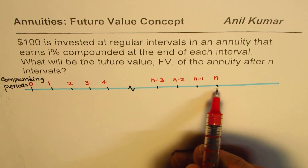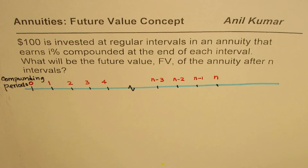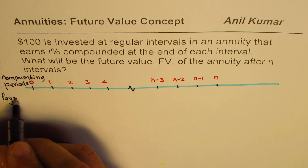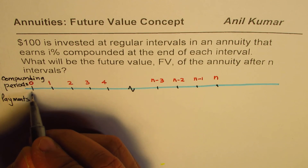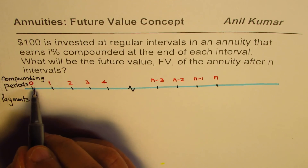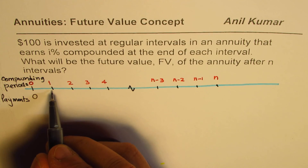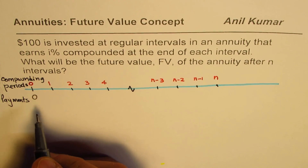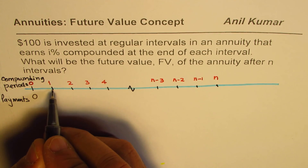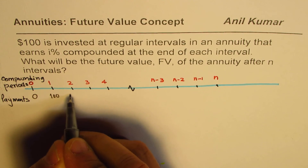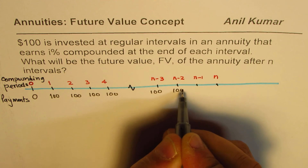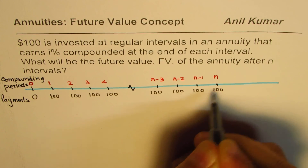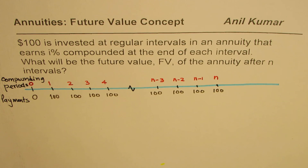The payments being made are $100. $100 is deposited at the end of each compounding period, so no payment is made at time zero — the first payment comes after one compounding period. That interval could be one year, one month, or any other period depending on your example. In our general case, $100 is deposited at the end of each compounding period along the timeline.